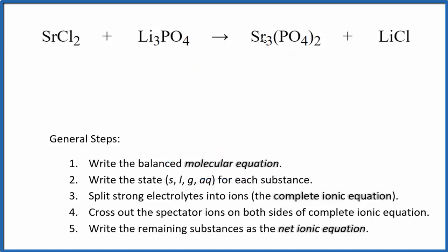I can see that I have three strontiums here and just one here. So I'm going to put a 3 in front of the strontium chloride. So that balances the strontiums. Three times two, that's six chlorine atoms. Let's put a six here.